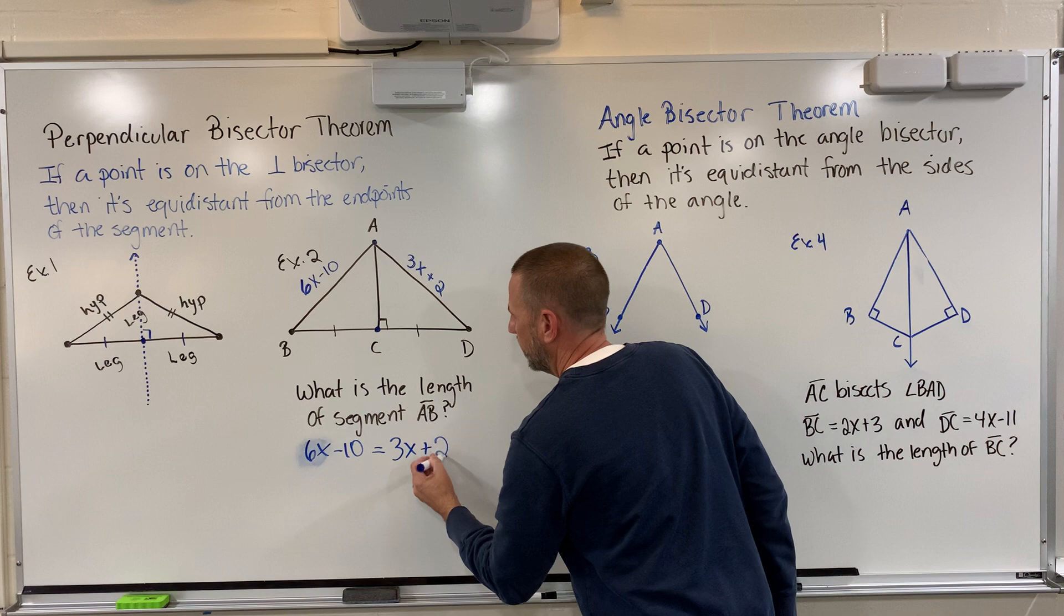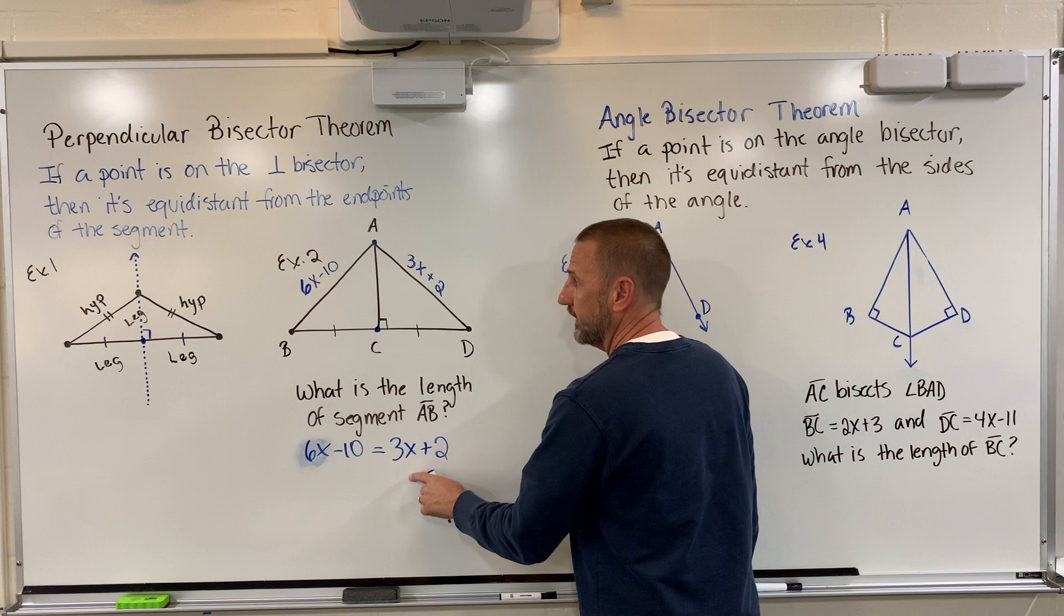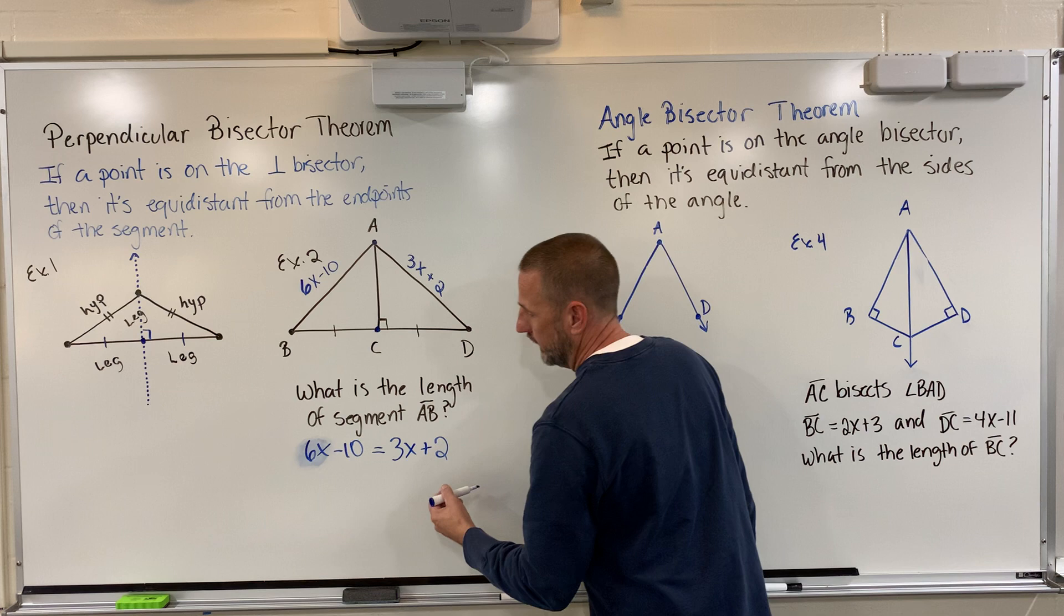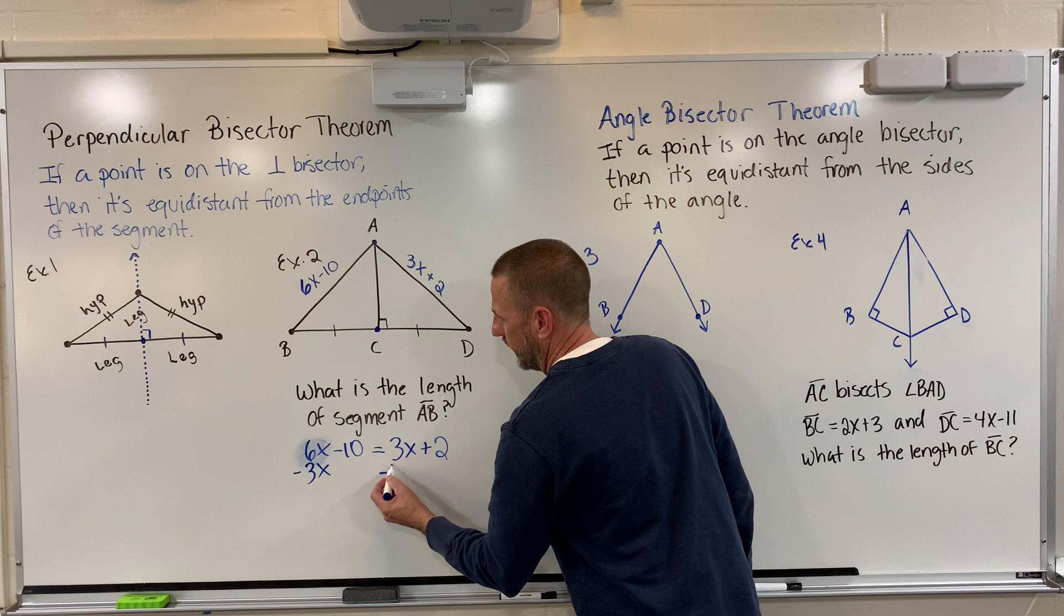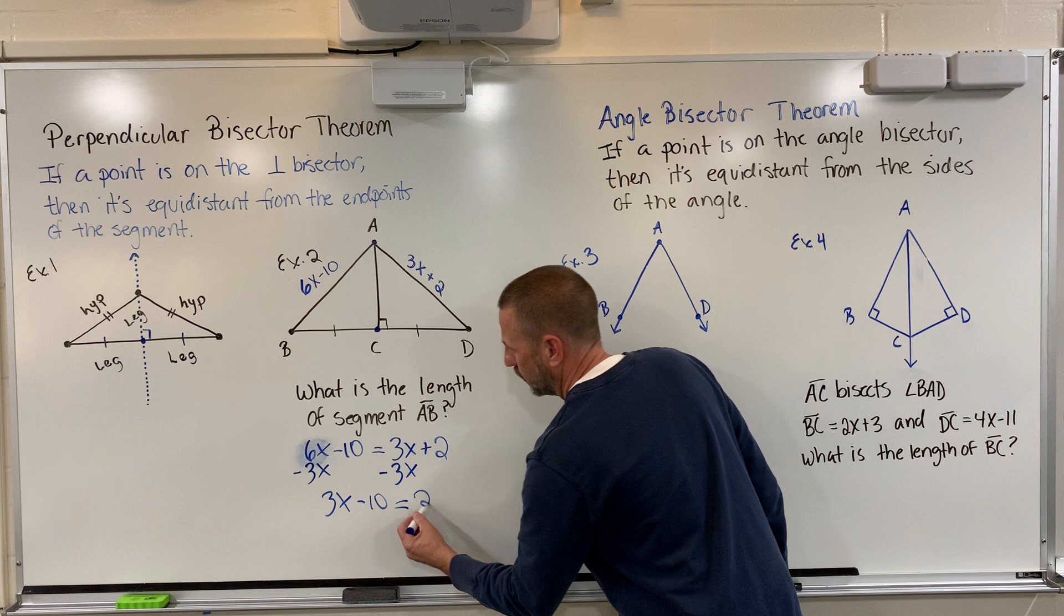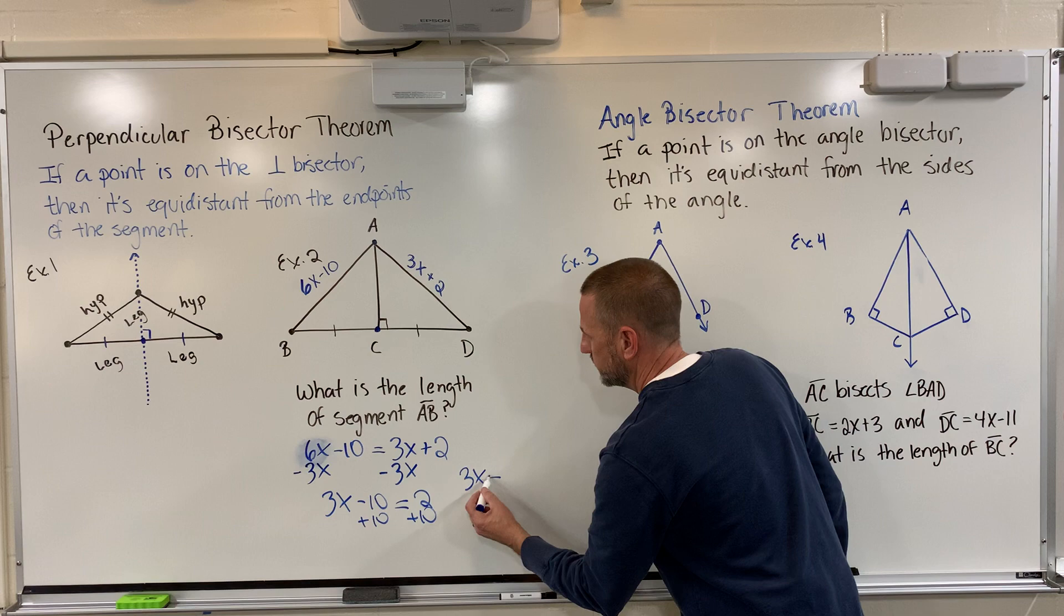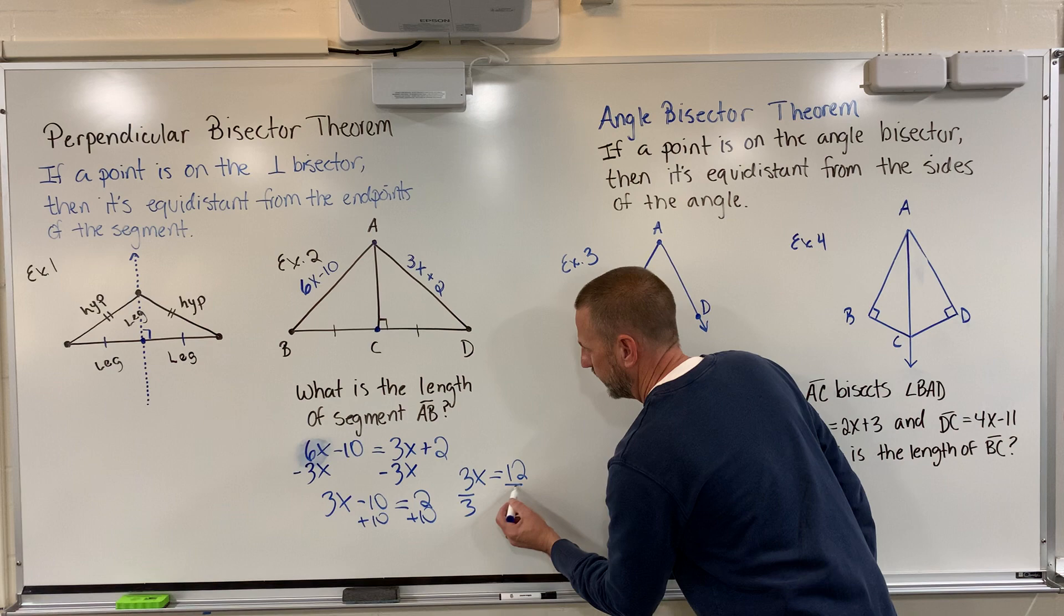Being as though I've written this out, I can solve this, and that will give me x. If I figure out x, I can go back and substitute it to get AB. I've got 6x and 3x, so I always go with getting rid of the smaller amount of x's from both sides. Now I have 3x minus 10 equal to 2. Adding 10, 3x equals 12. Which means that if I divide by 3, x will equal 4.